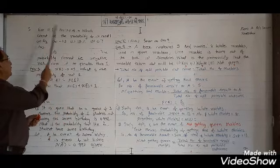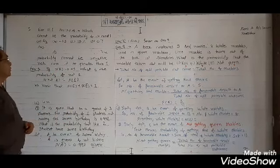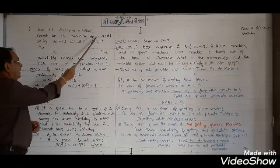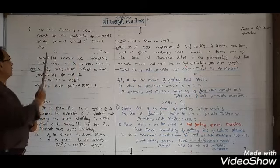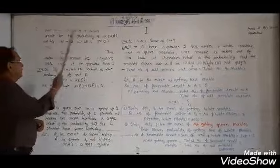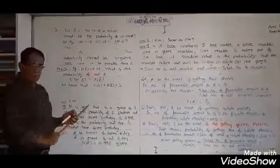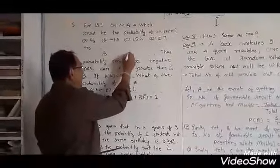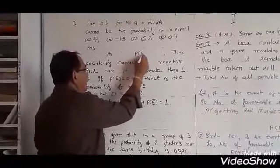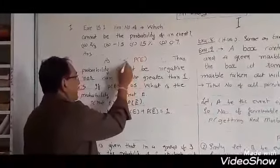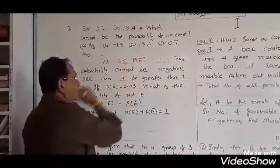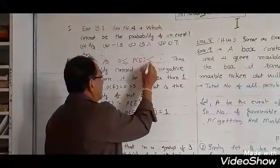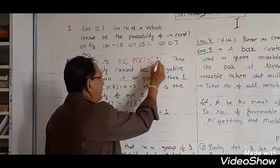Exercise number 15.1, Example number 4: which cannot be the probability of an event? The options are 2/3, minus 1.5, 15%, and 0.7. As we know that probability is greater than or equal to 0 and less than or equal to 1.